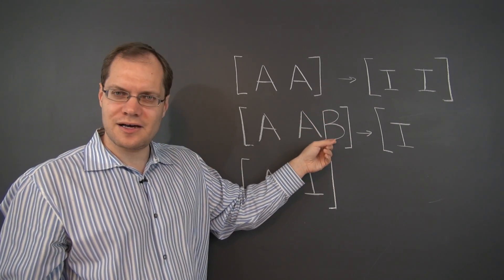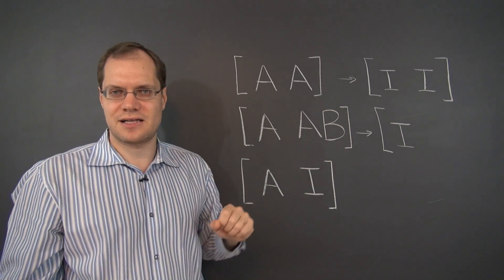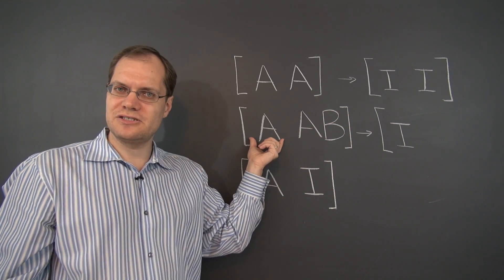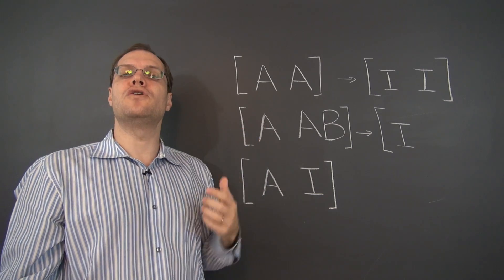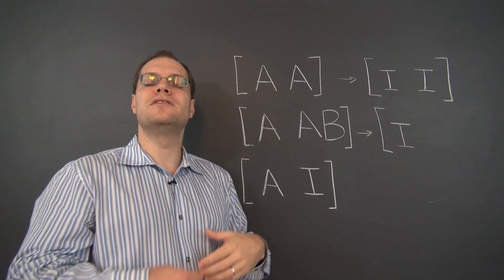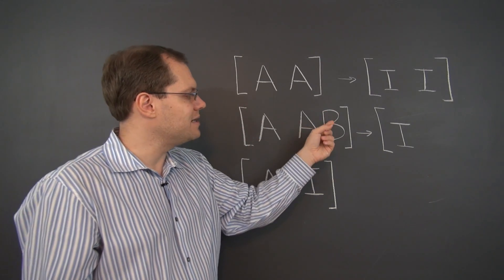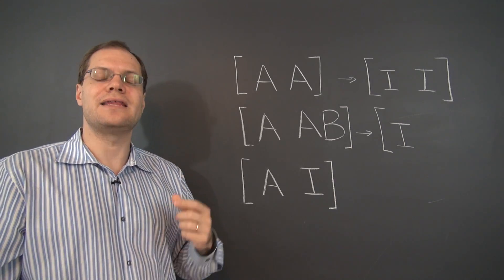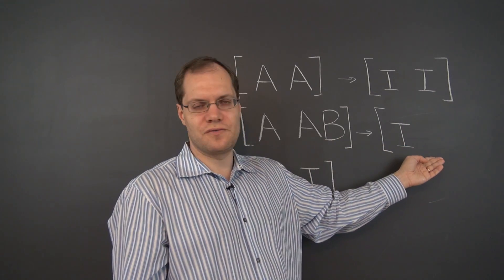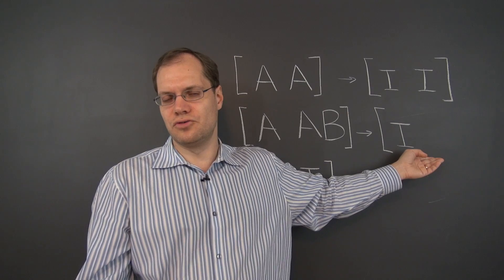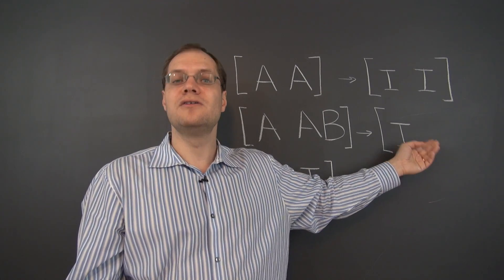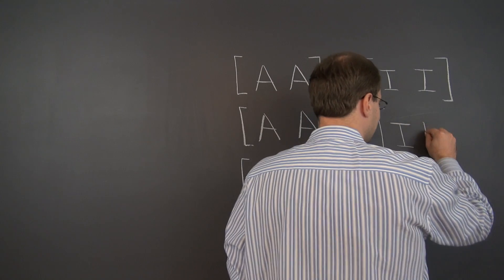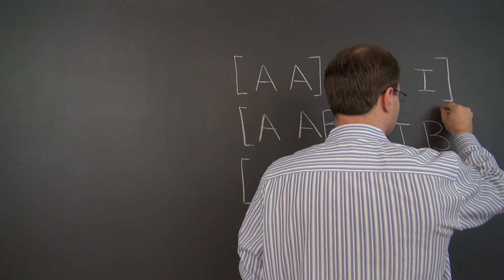The same logic applies to the fifth column and the sixth column. They will all be linear combinations of the columns of A, where the relationship is given by the entries of the columns of B. That relationship will be preserved in the eventual row reduced echelon form. So what we'll have left on the right side is simply the matrix B.